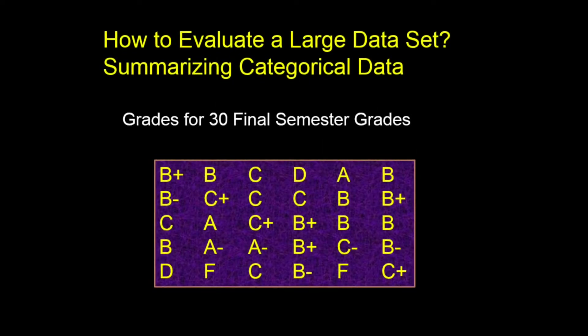Take a look at these letter grades. Even though there are only 30 grades here, it's hard to tell how many students got an A, a B, or even an F at first glance. You need to look at the letter grades very closely to get any sense of what the grade distribution looks like, and this is for just 30 students.